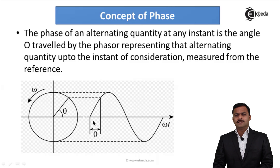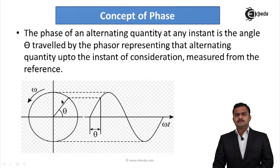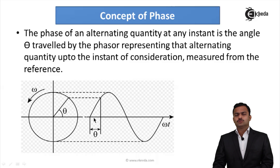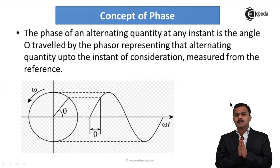Suppose this waveform is considered, and this waveform is represented as a straight line. This phasor is traveling from 0 to 2π, completing a circle. At one particular instant where this quantity is making an angle θ with the x-axis, correspondingly the waveform has traveled from here to here. So at this particular instant, the phase of the quantity is θ. Phase is nothing but how much the AC quantity has travelled from the reference.